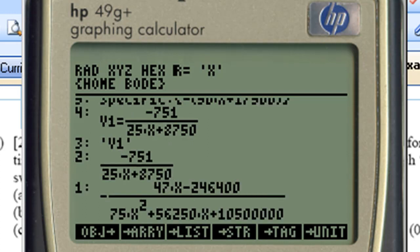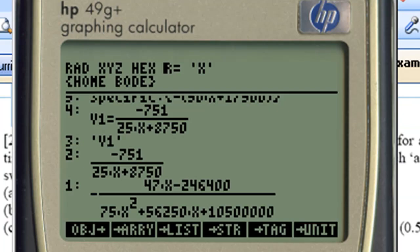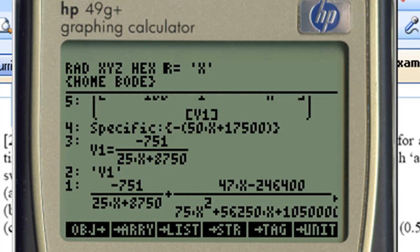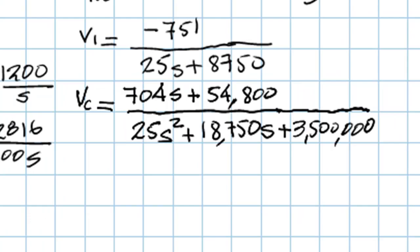If I multiply that current times this resistor and subtract that from V1, I should get Vc. That current. Enter 3. Multiply. Subtract from V1, which is at the top. Subtract. Evaluate. That is the voltage in the capacitor in the Laplace domain. Let me copy that.